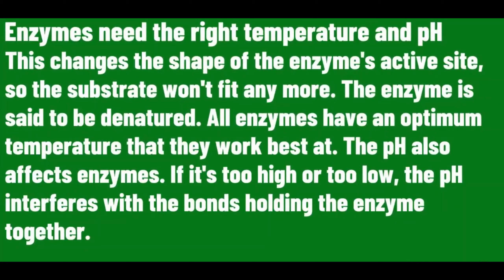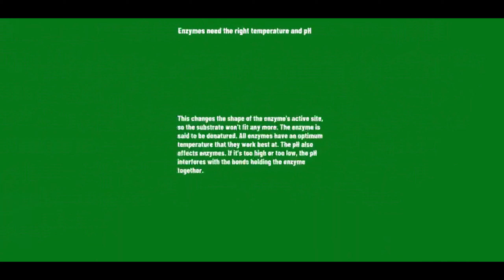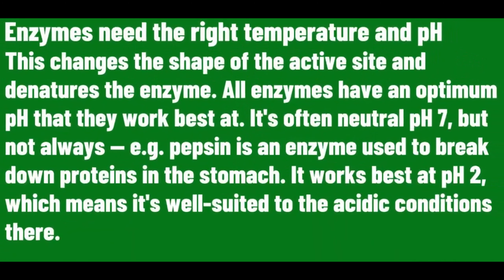All enzymes have an optimum temperature that they work best at. The pH also affects enzymes. If it's too high or too low, the pH interferes with the bonds holding the enzyme together, changing the shape of the active site and denaturing the enzyme. All enzymes have an optimum pH — it's often neutral pH 7, but not always.